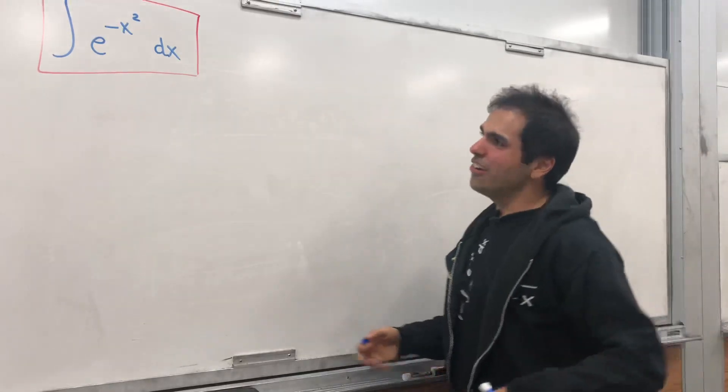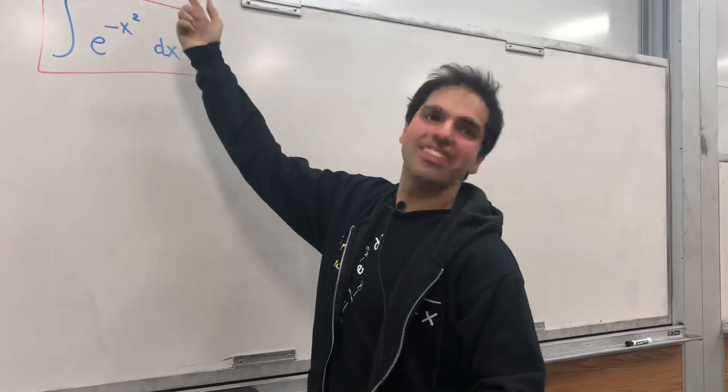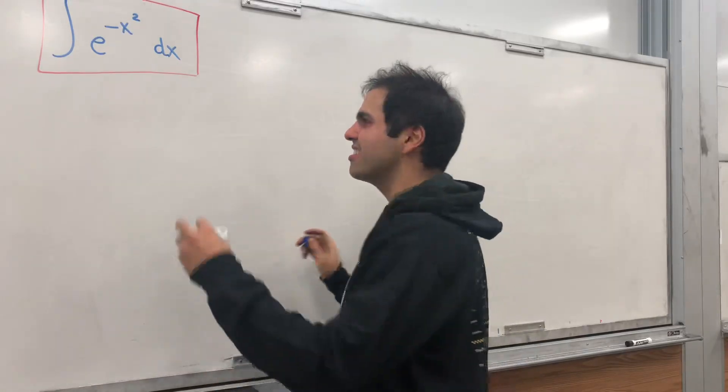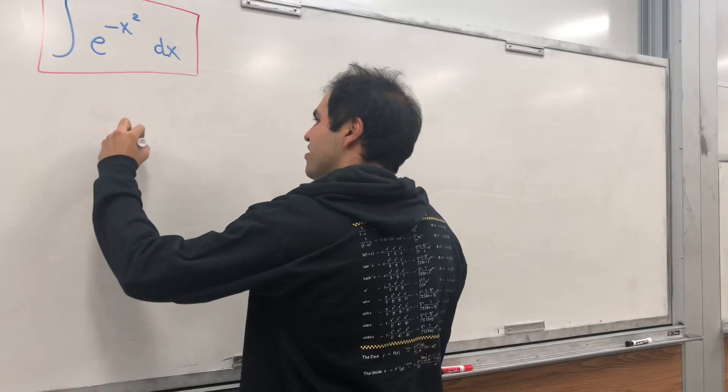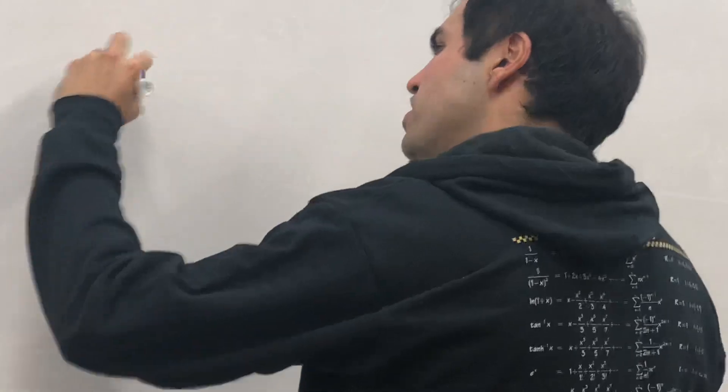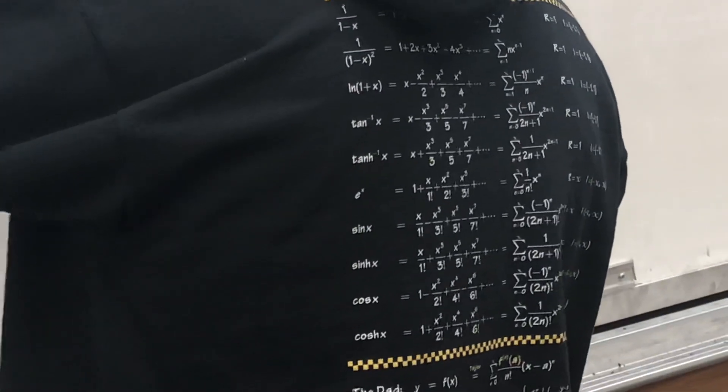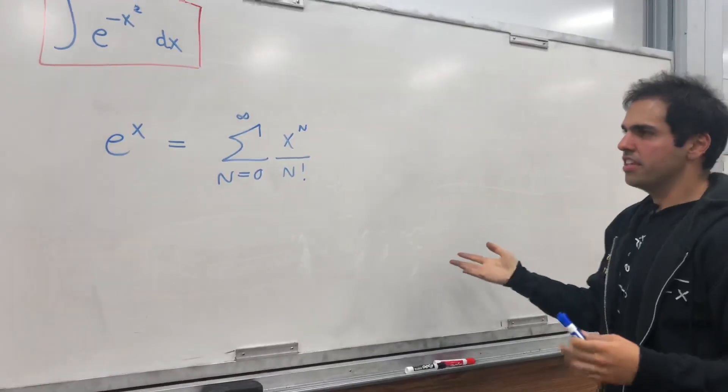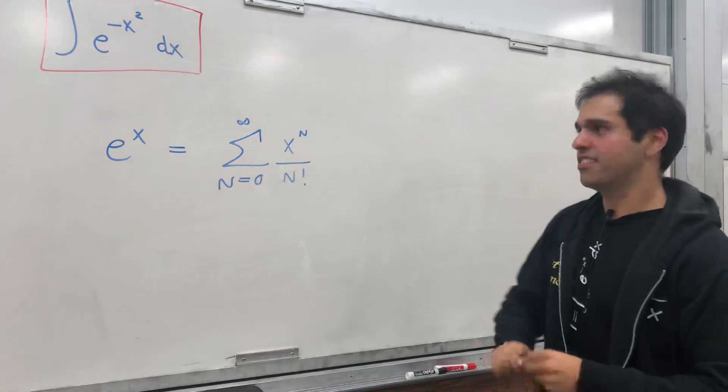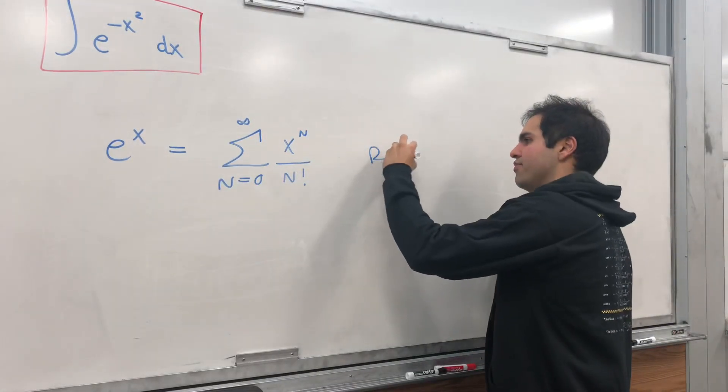So how do you do this? Well, you have e to the something, so you should use the power series of e to the x, which is the sum from zero to infinity of x to the n over n factorial. Now, the important thing is this works for every x. The radius of convergence is infinity.